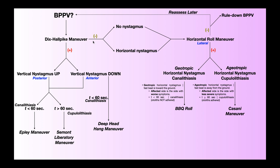If the Dix-Hall-Pike maneuver is negative and the horizontal roll maneuver is also negative, you can rule out BPPV as a contributor to the patient's dizziness and proceed with a different treatment approach. However, if after another treatment approach the patient is not reporting any gains and not getting better, you might come back and reassess with these two special tests again, as there's a rare chance they came up negative for whatever reason on the first assessment.